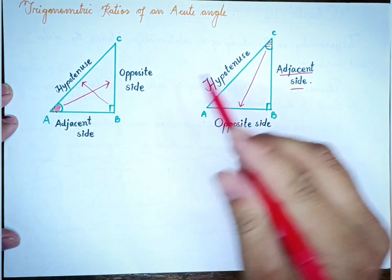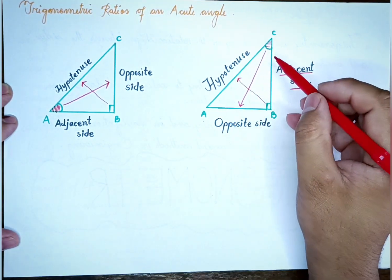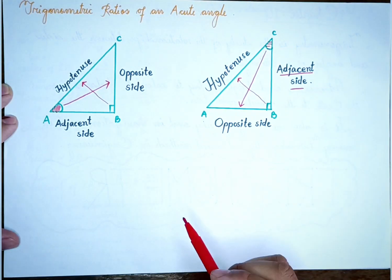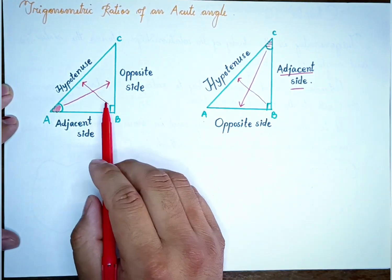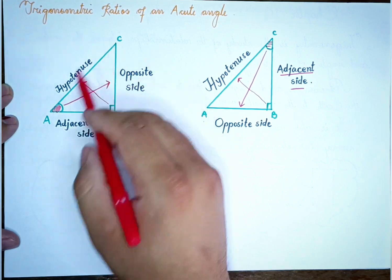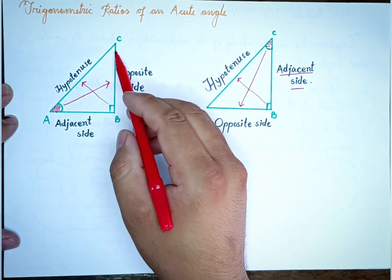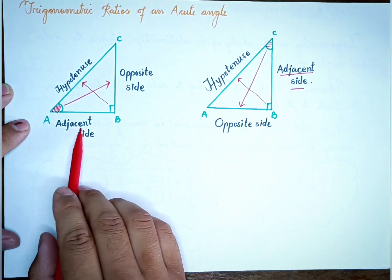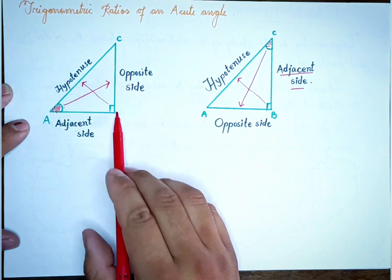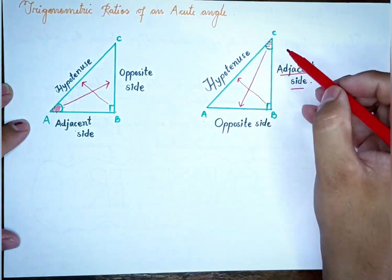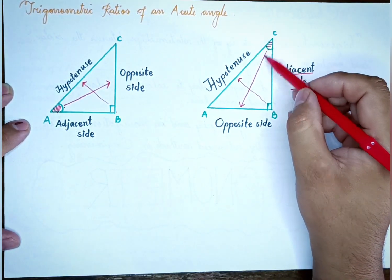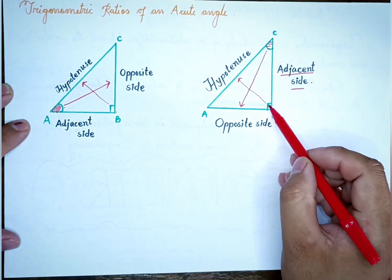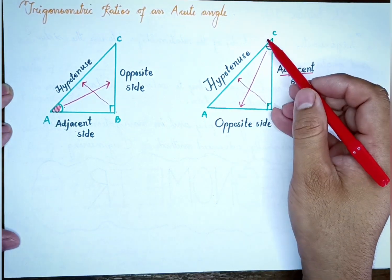It is the hypotenuse side. The right angle is opposite the hypotenuse. Angle A is considered to have an opposite side, and B is the opposite side, and the 90-degree opposite side is the hypotenuse.